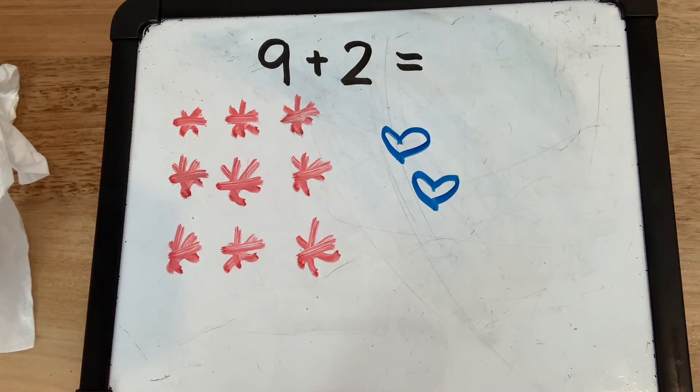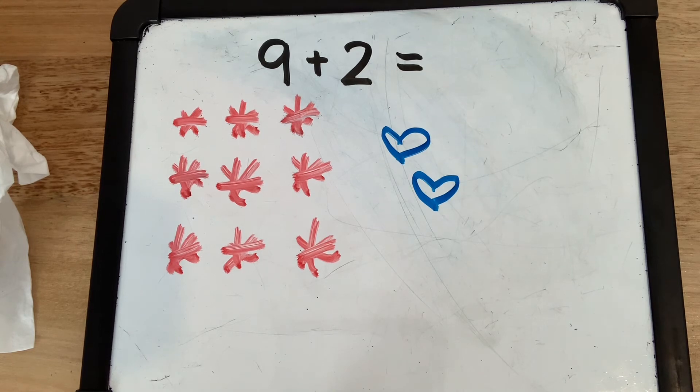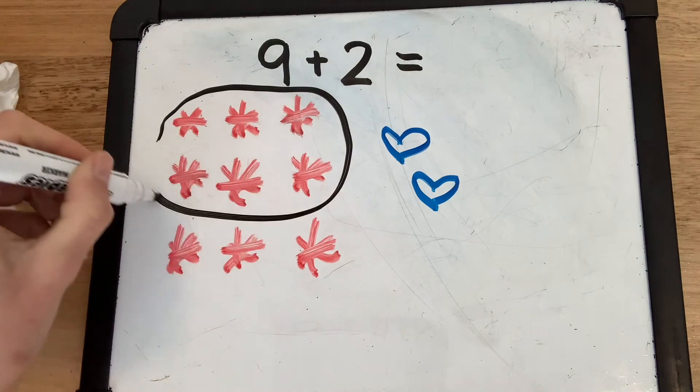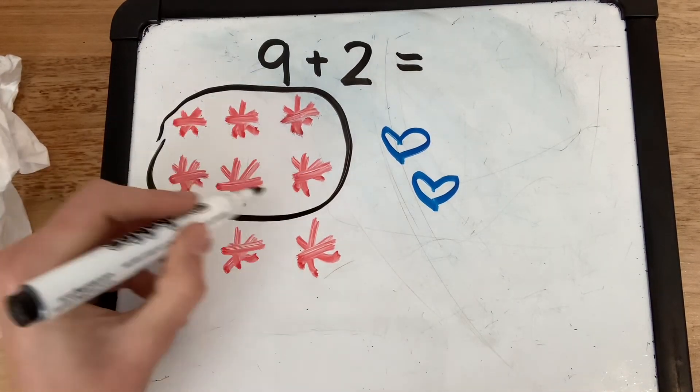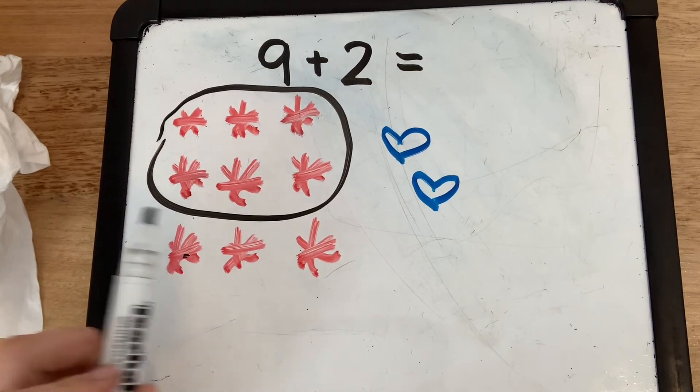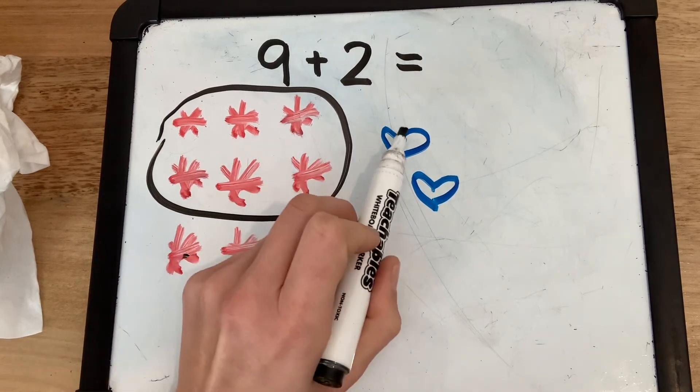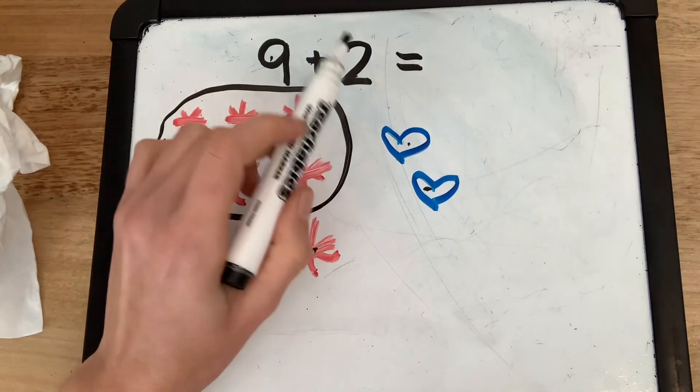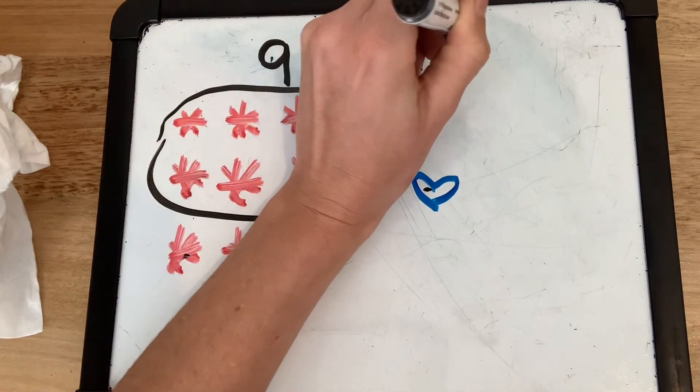Okay, time to solve it. So we can use lots of different ways to work it out. I'm going to start from 6 because I can see that 6 there. So 6 and I'm going to keep counting on 7, 8, 9, 10, 11. So 9 plus 2 makes 11.